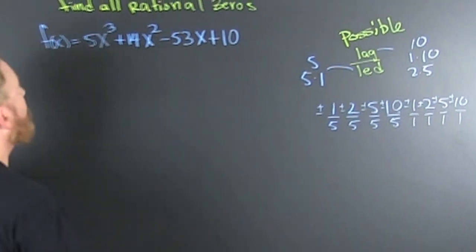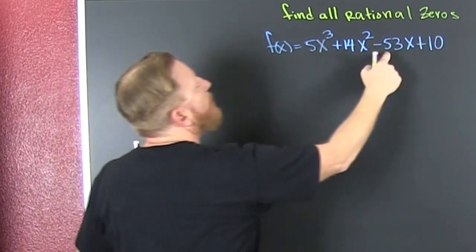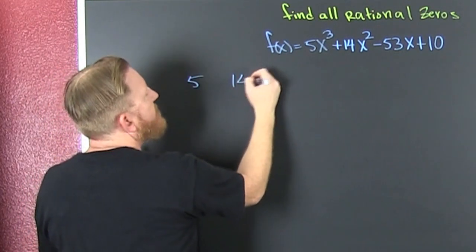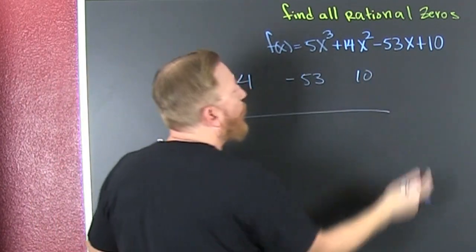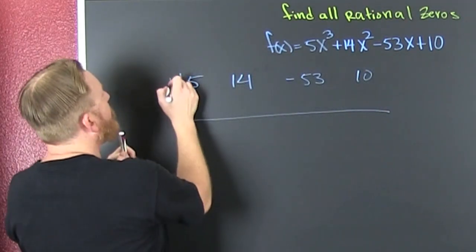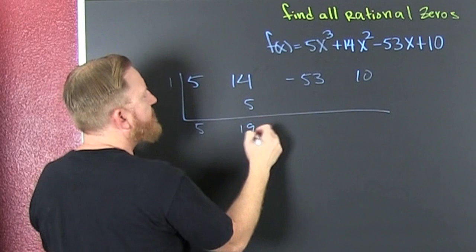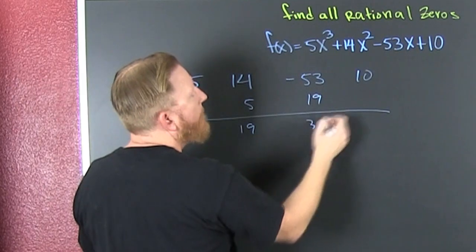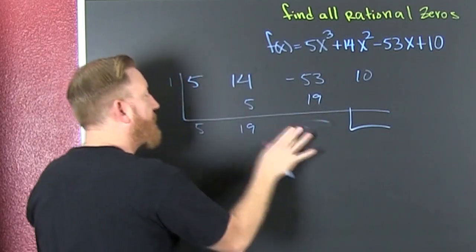Alright, here we go. Because we're finding all the possible rational zeros, I'm going to put my coefficients in my synthetic division, because we're looking for those linear factors. So that's a 5, a 14, a minus 53, and a 10. I could start with 1 — I should probably start with 1. Look, that big negative right there means this should probably be positive. So that's 5, 5, 19, 19, 40... 30-something. But it's not going to work, because I'm looking for a zero right there.